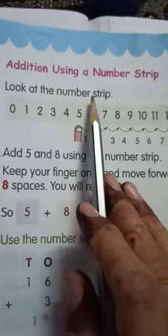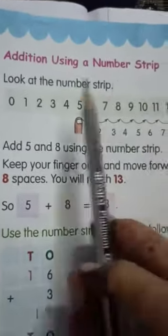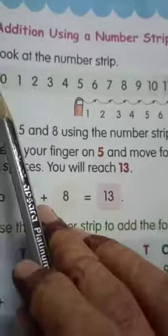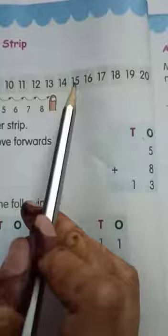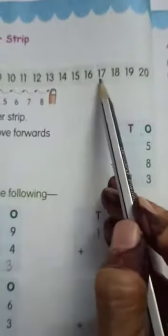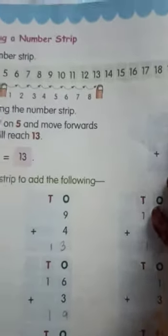Next, addition using a number strip. Now, look at this number strip. 0, 1, 2, 3, 4, 5, 6, 7, 8, 9, 10, 11, 12, 13, 14, 15, 16, 17, 18, 19 and 20.